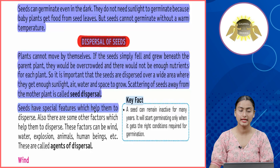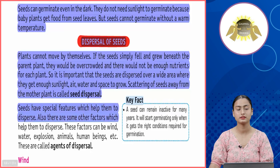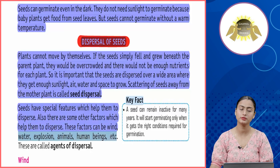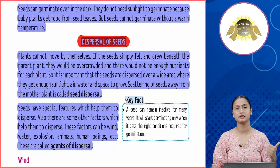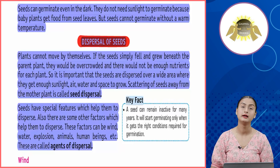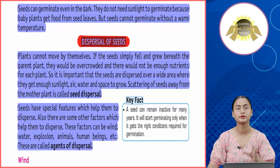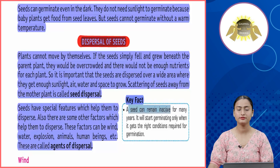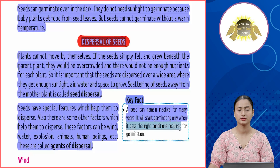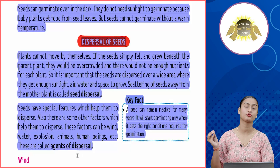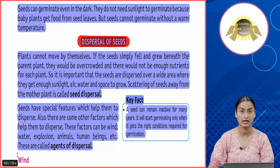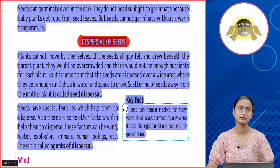Seeds have special features and other factors which help them disperse. These factors — wind, water, explosion, and animals — are called agents of dispersal. Key fact: a seed can remain inactive for many years. It will start germinating only when it gets the right conditions required for germination.